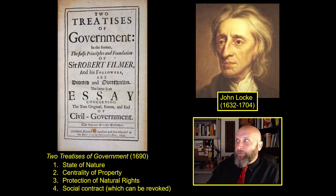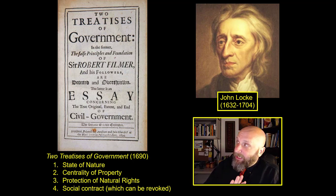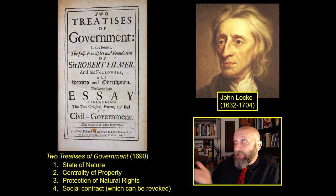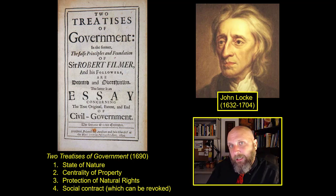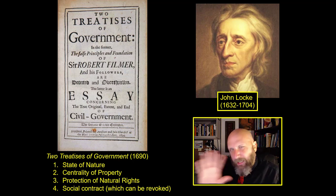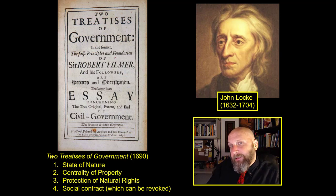What John Locke wants to do in this book is basically demolish the divine right of kings. He thinks Robert Filmer is a complete idiot and there is no divine right of kings. So he writes the Two Treatises, and Robert Filmer's name features quite prominently on the cover. For the purposes of this class, John Locke hits on four major points in the Two Treatises of Government.